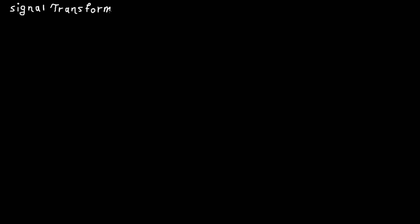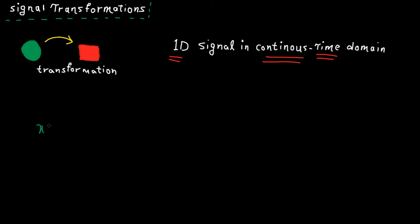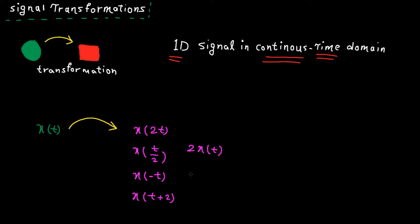Welcome to my lecture on signal transformation. The first question is: what is transformation? It's not rocket science, it's very easy. The act of transforming a signal from one shape to another is called transformation. As I mentioned last session, in this course we work with one-dimensional signals in the continuous time domain, which is represented by x(t). Now let's write down some examples of transformation: x(2t), x(t/2), x(-t), x(t+2), 2x(t), and x(t)+3. In this tutorial, I'm going to explain all these transformations and their meaning.